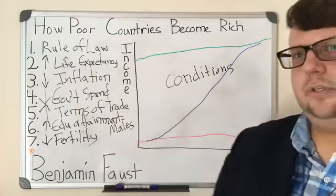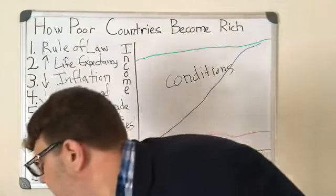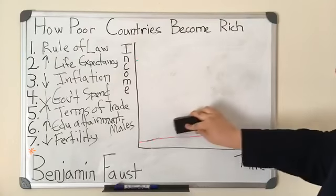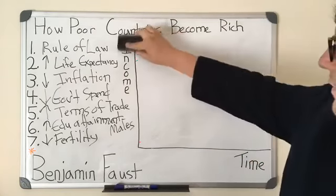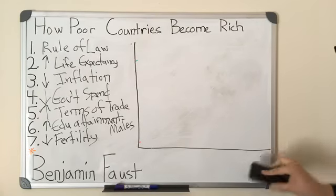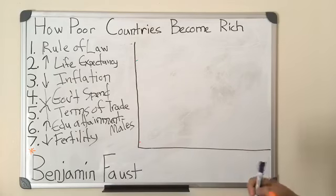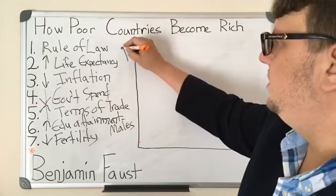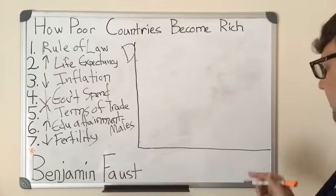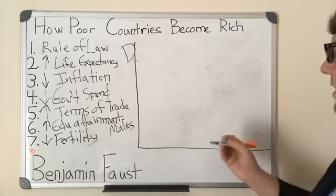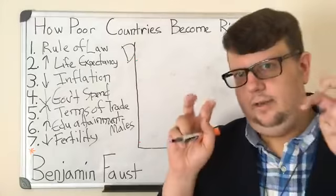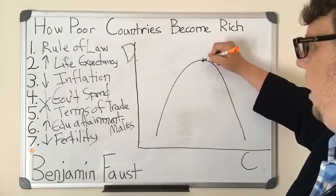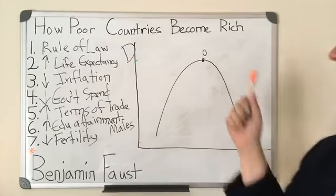There are seven factors, plus a star — an eighth factor that is not universal. We're going to talk about democracy and whether or not it helps. The level of democracy has a nonlinear relationship with economic growth — like a parabola. There is an optimal level of democracy for each country.